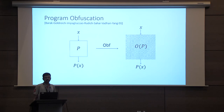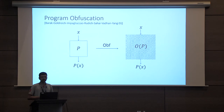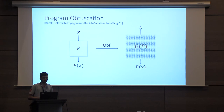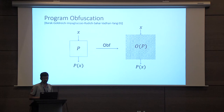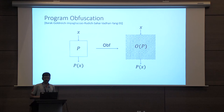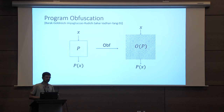Let me start with the notion of program obfuscation. Program obfuscation was introduced in the seminal work of Barak et al., and it is modeled as a compiler that takes a program P as input and outputs another program O(P) that preserves the functionality of the original program but hides all the implementation details. This security notion has been formalized in different ways, and in this talk I'll be focusing on the indistinguishability-based definition.